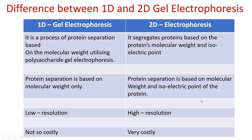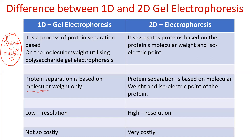Now the last part from this chapter unit: the difference between 1D and 2D gel electrophoresis. In native PAGE, separation was based on charge and size. In SDS PAGE, all proteins are brought to negative charge — so only molecular weight is considered. Using only one property of the protein — charge or molecular weight — is called 1D gel electrophoresis.